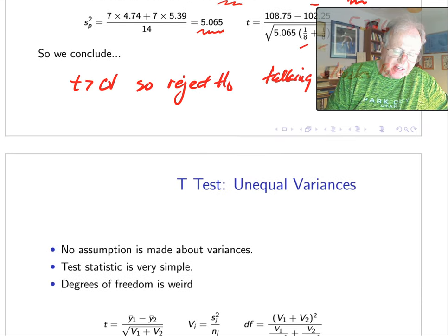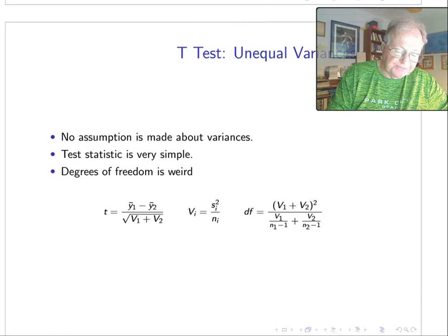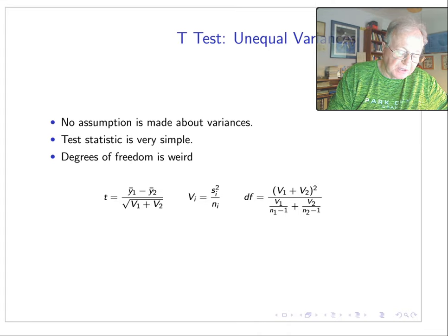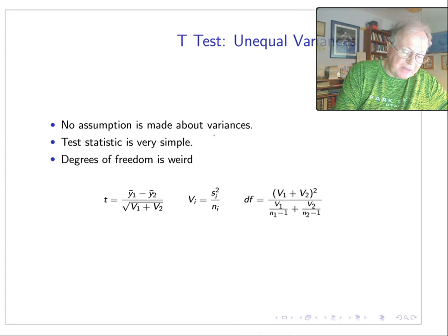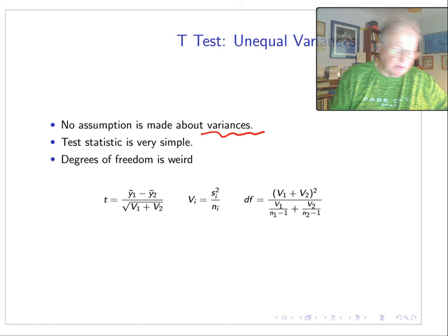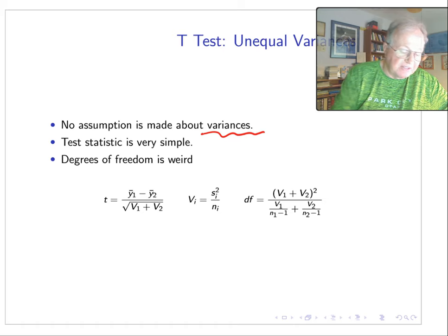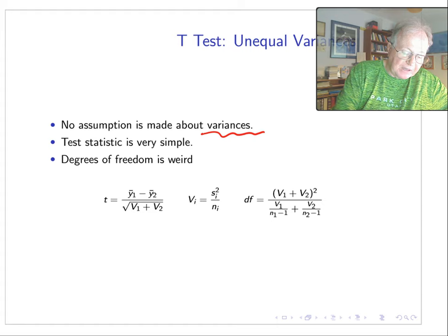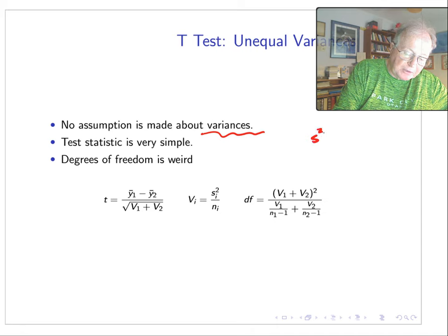What about the unequal variance case? In this case, no assumption is made about variances, so we don't have to worry about homogeneity or any of that kind of stuff. The test statistic is very simple. We're basically just going to add the variance contributions for the two groups.